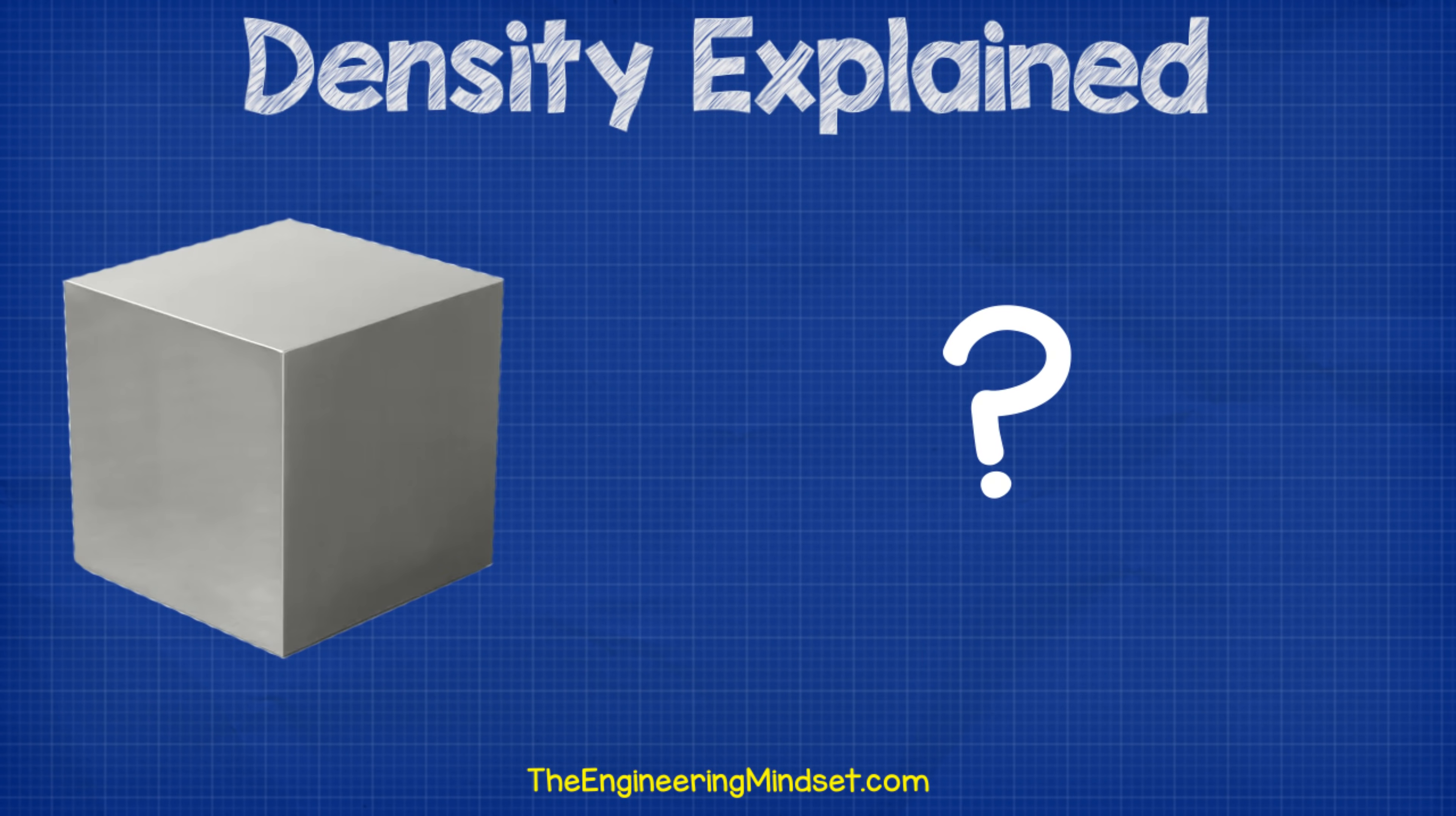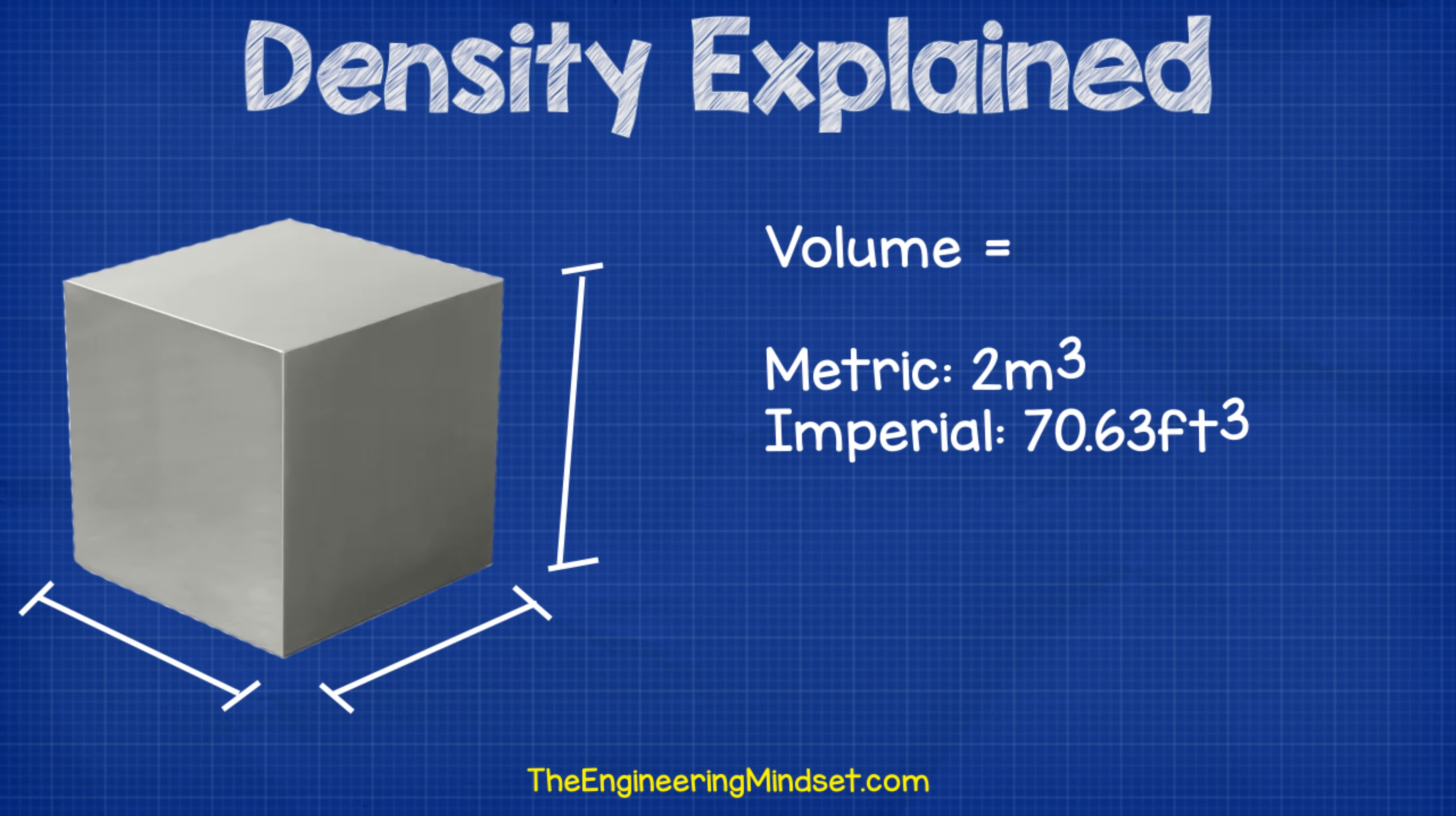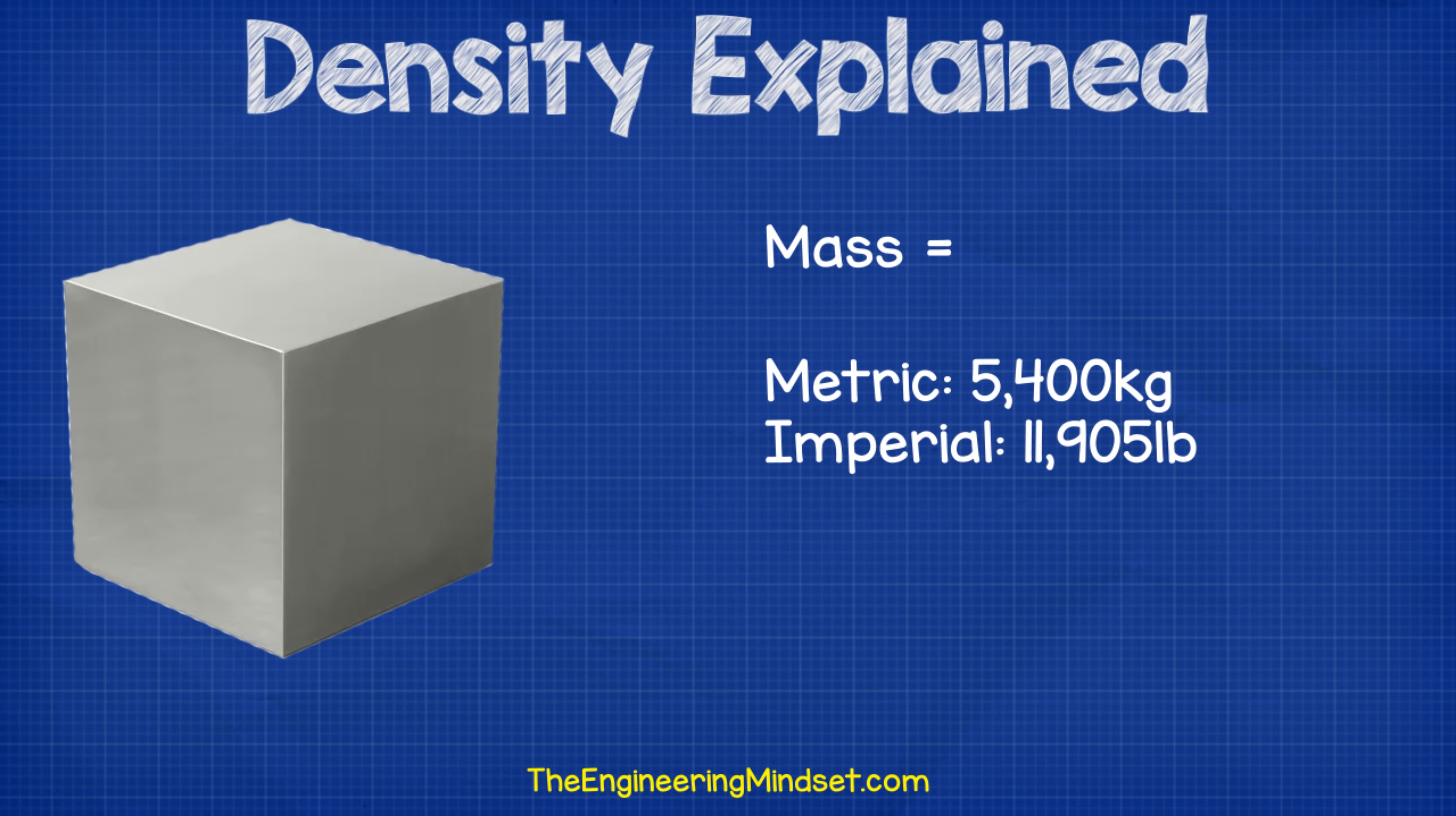So let's look at an example. You have a large solid metal block but you're unsure what material it is made from. You're considering maybe it's stainless steel or maybe it's aluminum. You measure the block and you find that it has a volume of 2 cubic meters, equivalent to 70.63 cubic feet. You then weigh it and you find it has a total mass of 5,400 kilograms, equivalent to 11,905 pounds.